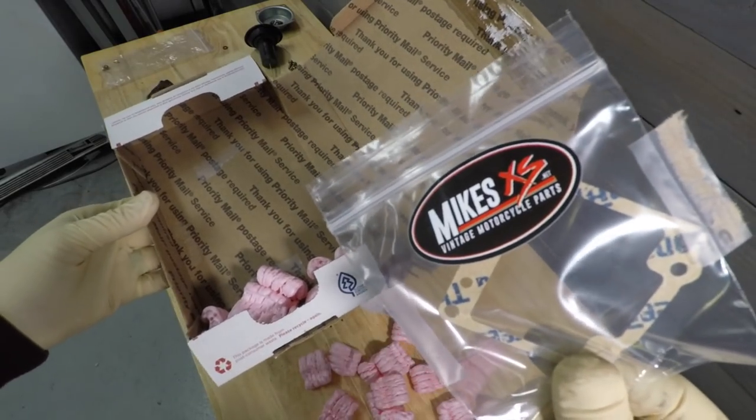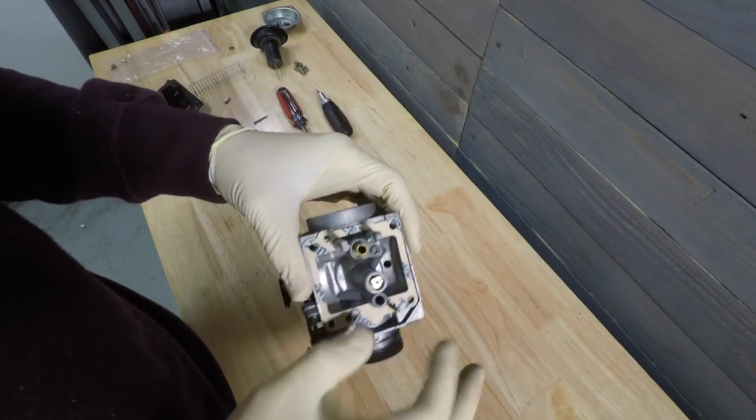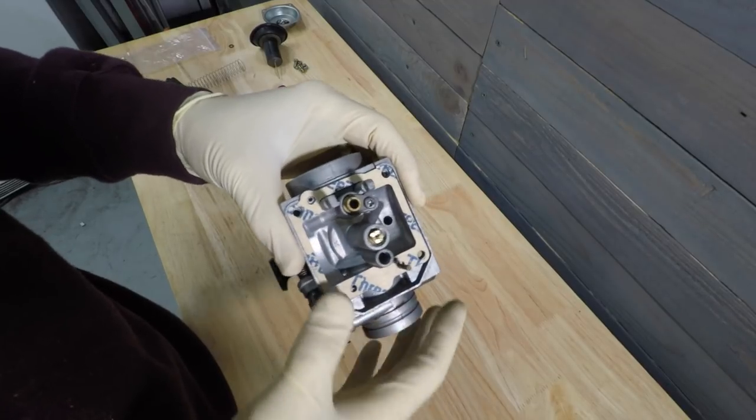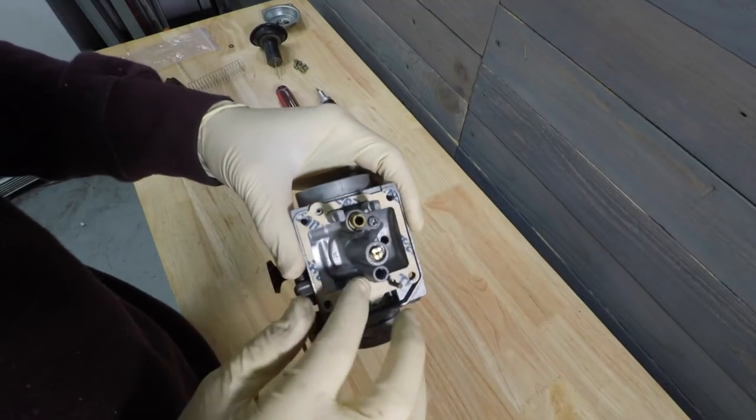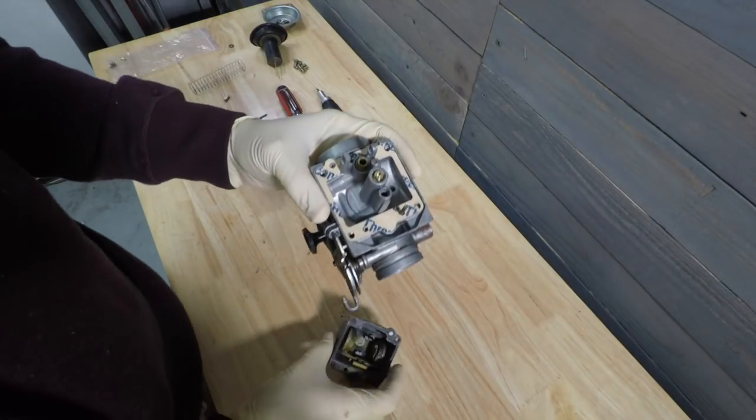Gasket from Mike's XS. So we just install that gasket right there. Helps preventing the air or anything from sucking in these edges. Makes a real good seal. And now we can reinstall our float.